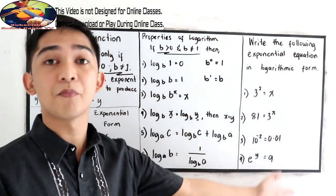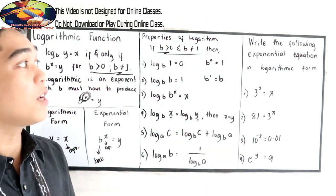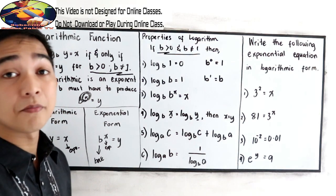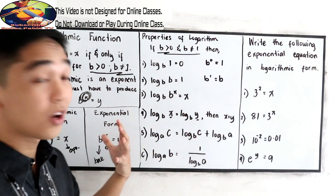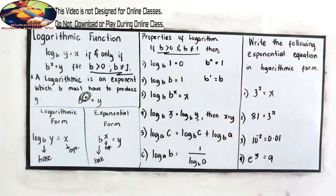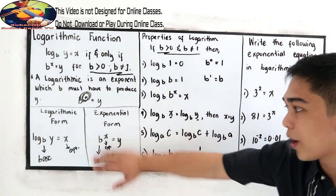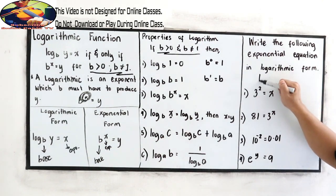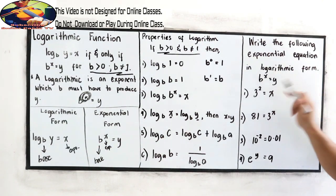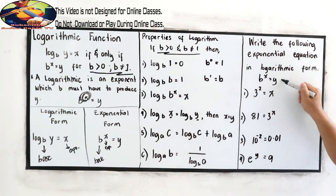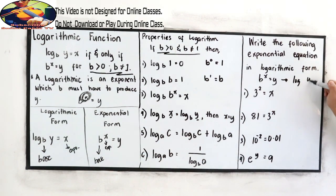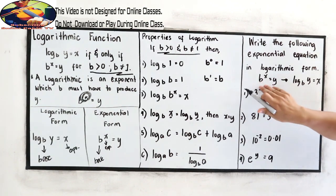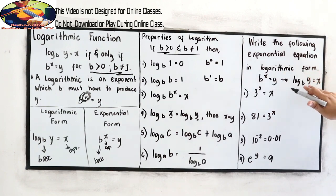To better understand the logarithmic function and its properties, let's have this example: write the following exponential equations into logarithmic form. From our discussion, we know that if we have B raised to x is equal to y, we can write it in logarithmic form as log y base B is equal to x. So from exponential form, we're going to write into logarithmic form.